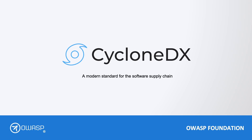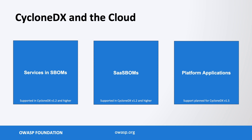Welcome. In this talk, we are going to be focusing on how OWASP CycloneDX thinks about the cloud. In CycloneDX, when we think about the cloud, we think of three different buckets of things. The first bucket on the left are services as inventory in a traditional software bill of material. This has been supported in CycloneDX for many years already, since version 1.2.